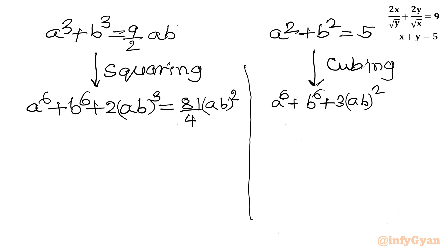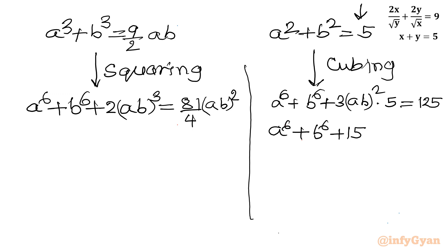Since a squared plus b squared equals 5, we write 5 directly. So a to the 6th plus b to the 6th plus 15 ab squared equals 125, because 5 cubed equals 125.